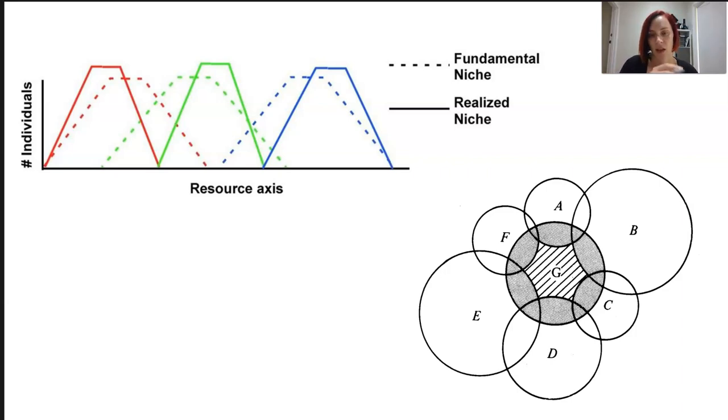In this image with the multiple species, that fundamental niche would be the entire G circle. Whereas the realized niche would be where there's no overlap. That's what it has to live within because it's making all of those compromises.